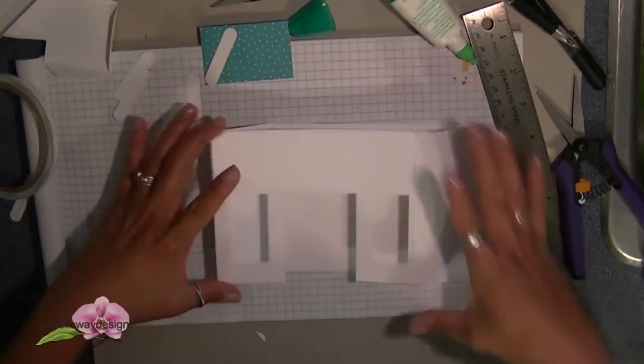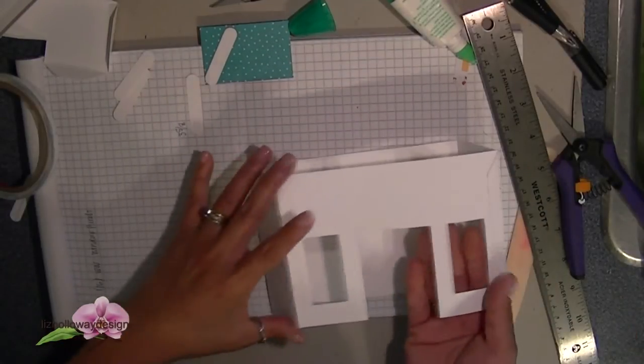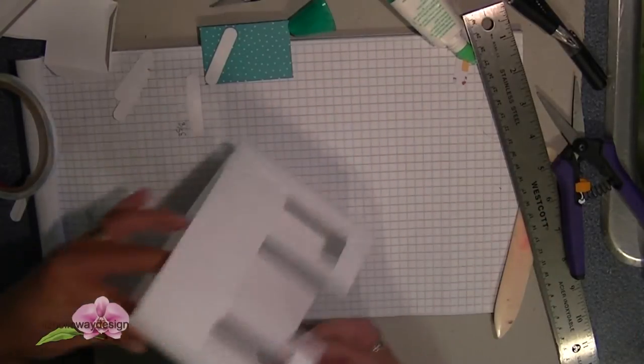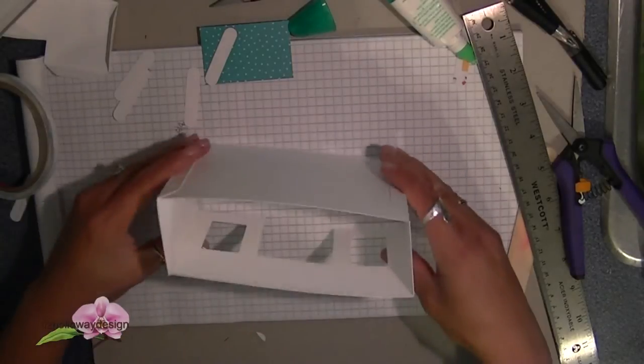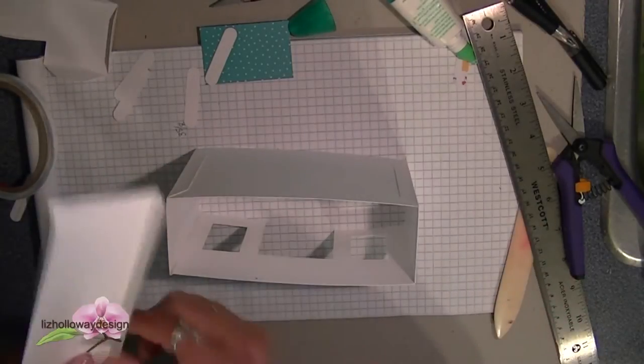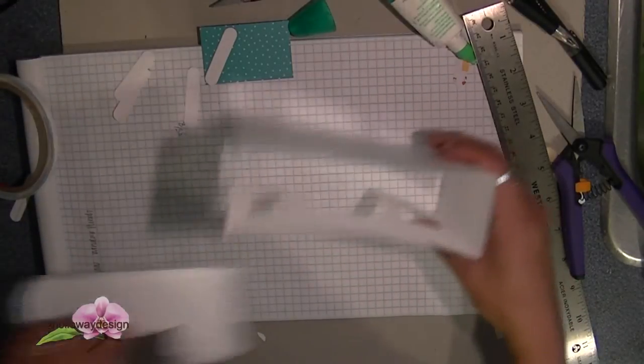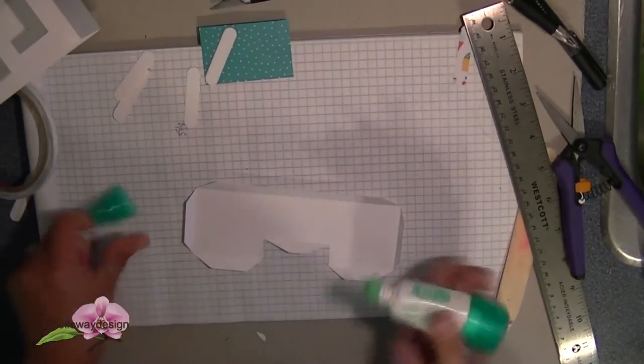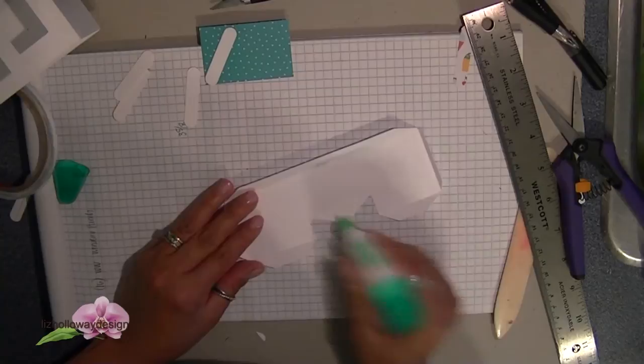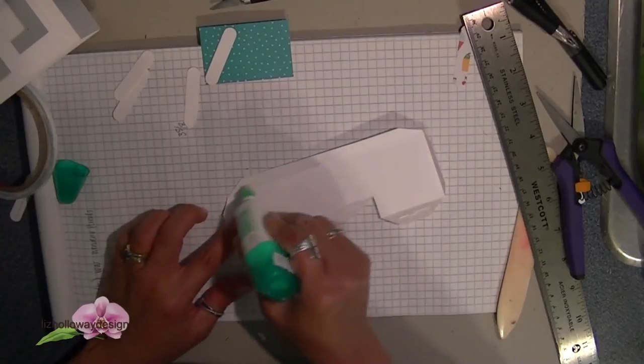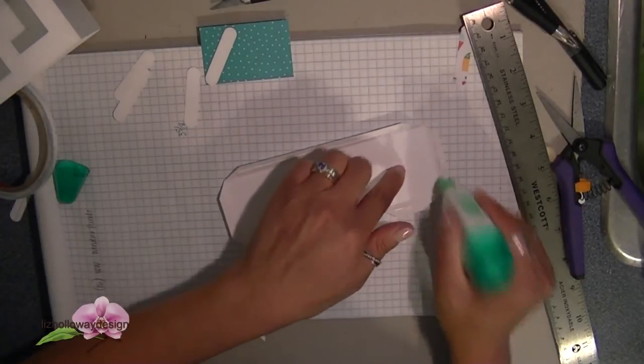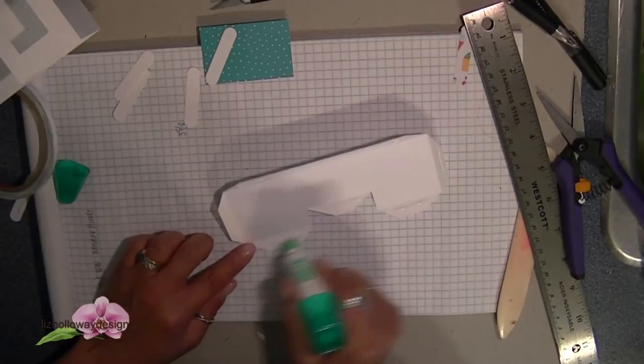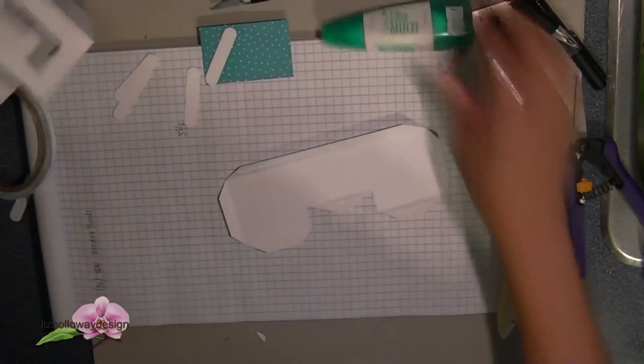When you are done attaching your side, then go ahead and attach the front panel and again tabs on the outside. Now that you have your box done, glue the bottom panel down and ensure that it is secured into place before moving to the recessed door panel.